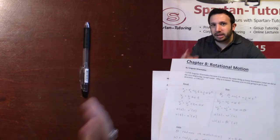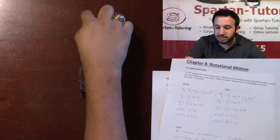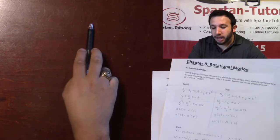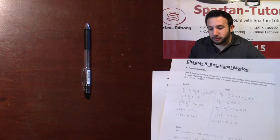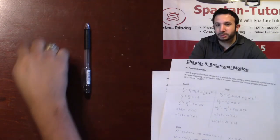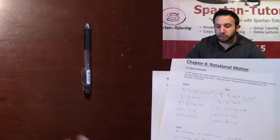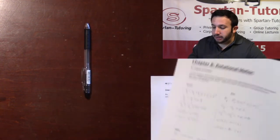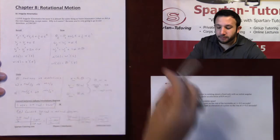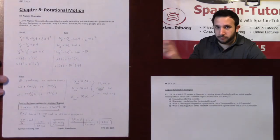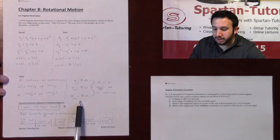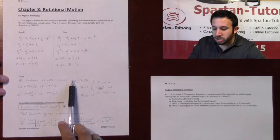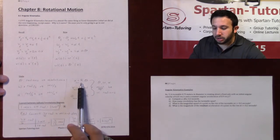Now let's think about linear velocity. The tip has to travel a farther linear distance than the bottom of the black part. So even though they have the same angular velocity, the tip is moving faster in terms of linear velocity because it must travel a greater linear distance. That's where the angular-to-linear conversion comes into play.